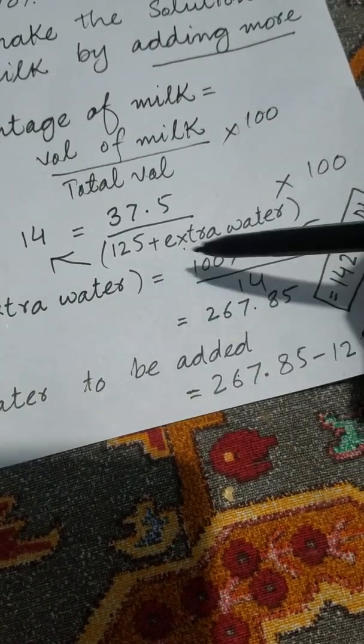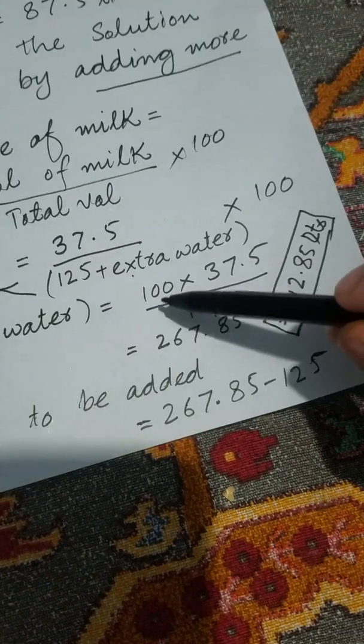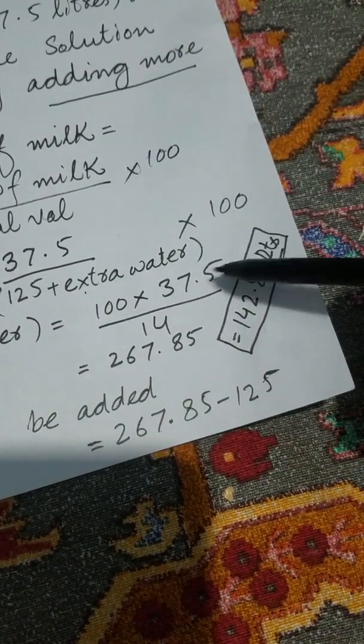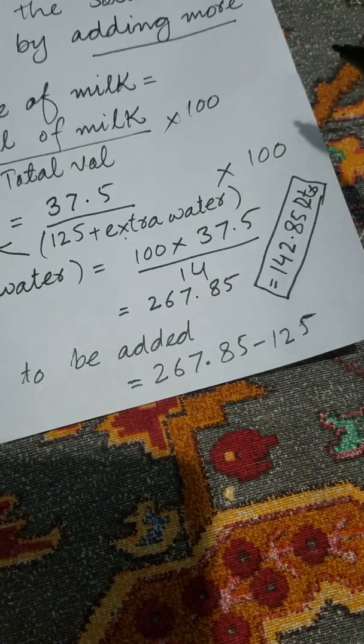125 plus extra water equals 100 times 37.5 divided by 14. This is equal to 267.85.